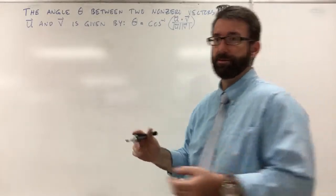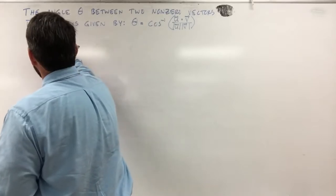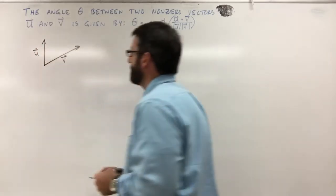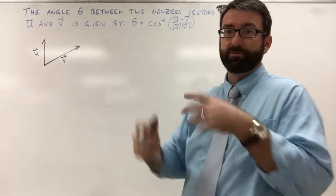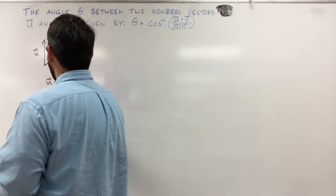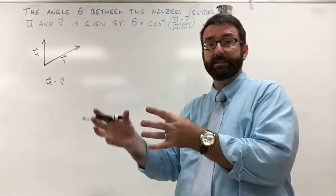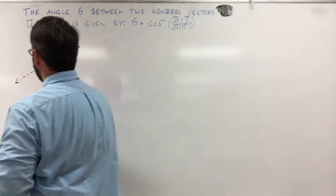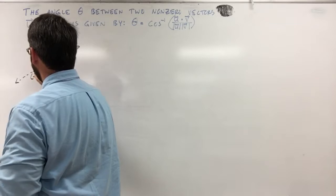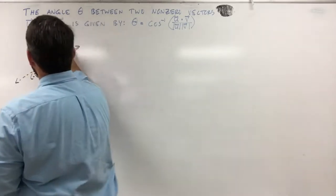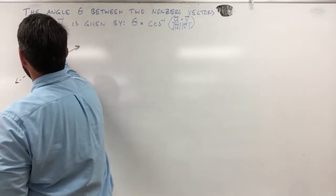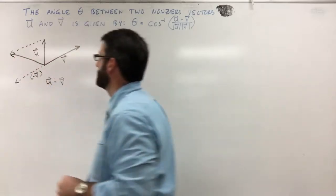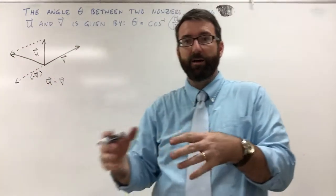So let's start by drawing two vectors, u and v. We'll draw a vector like this and a vector like this — we'll call this vector u and this vector v. Now, notice that if we were to subtract these two, vector u minus vector v, that's the same as u plus negative v. Negative v would just be this vector continuing in the opposite direction of v.